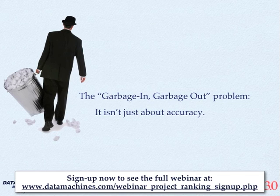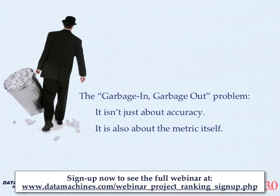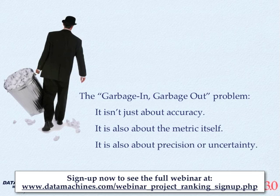But there are really three other questions besides how accurate is the data that need to be considered when it comes to dealing with the garbage in, garbage out problem. The first question is: is the metric quantifiable and how does it impact project value? The second one is: what is the precision or uncertainty around the data? And the third one is: how important is the data to our decision?